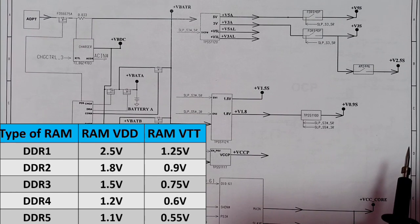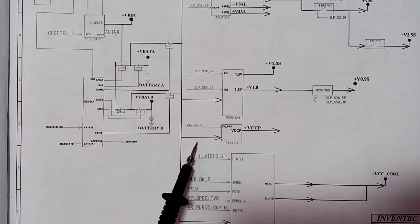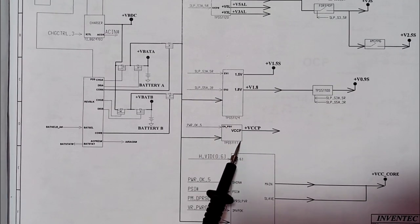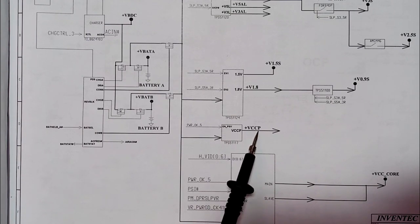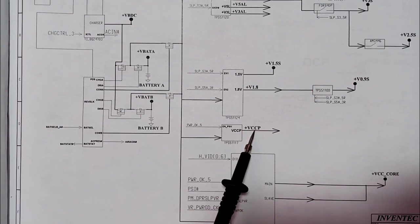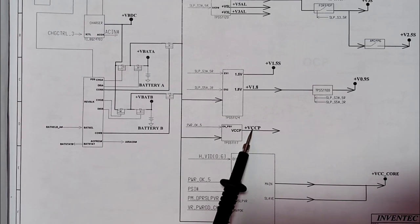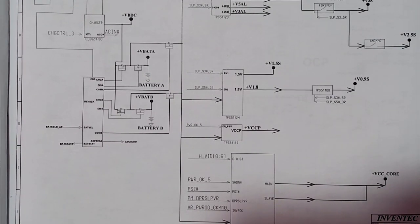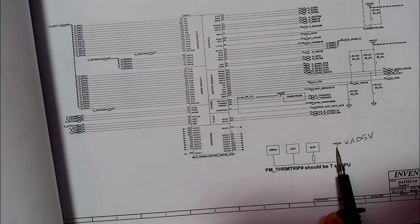For DDR4 it's 1.2 V and 0.6 V VTT, and for DDR5 it's 1.1 V and 0.55 V VTT. Then the 19 volt or VBAT is applied to another circuit — TPS51170 — which generates plus VCCP, about 1.05 volt. This VCCP powers three chipsets in the motherboard: the CPU, the North Bridge, and the graphic card, as well as the ICH.